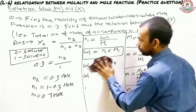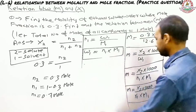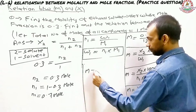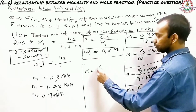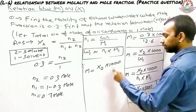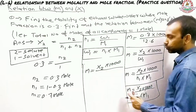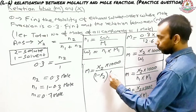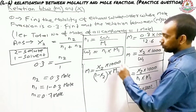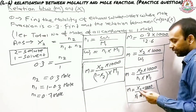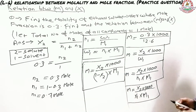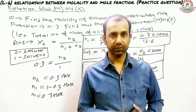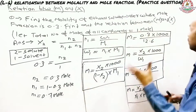One final relation: since x₁ = 1 − x₂, we can write m = x₂ × 1000 / ((1 − x₂) × M₁), where M₁ is the molar mass of the solvent. This gives us four useful relations between molality and mole fraction.